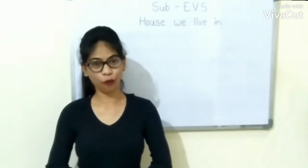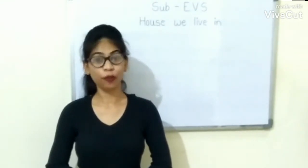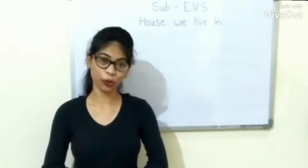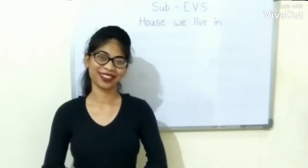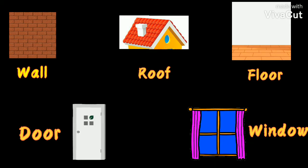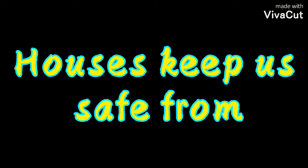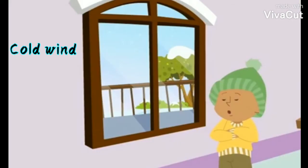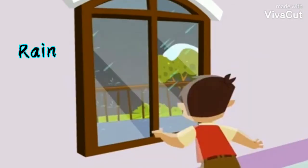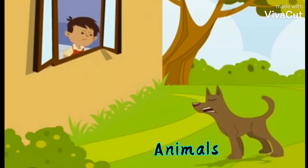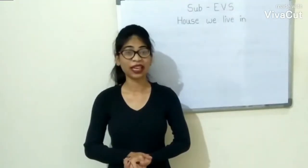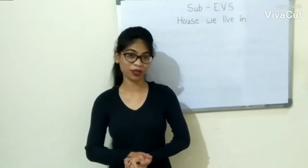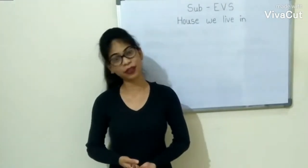A house has walls, roof, floors, doors and windows. A house keeps us safe from hot sun, cold wind, rain, and animals. In a house, we feel safe and comfortable.